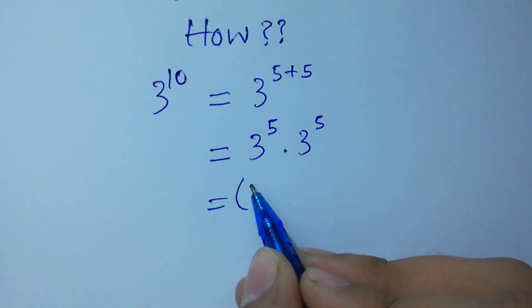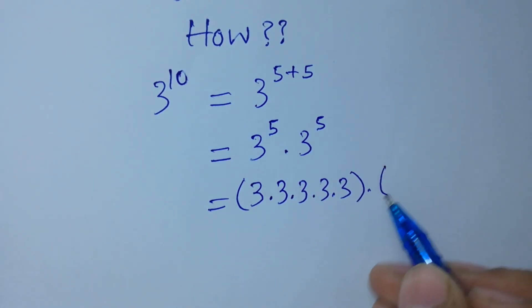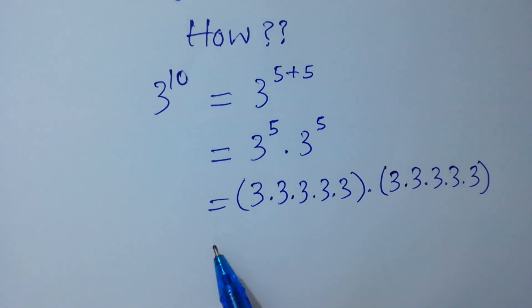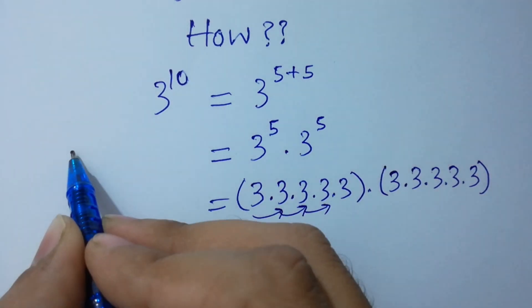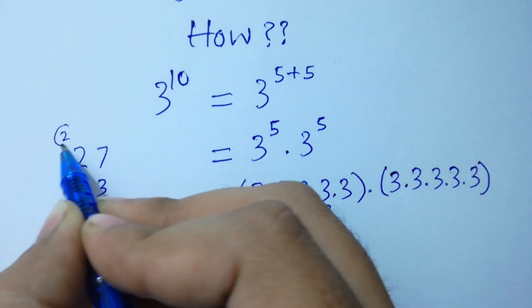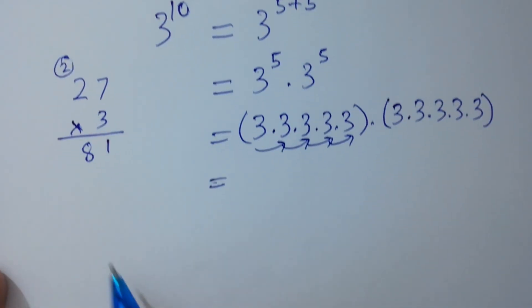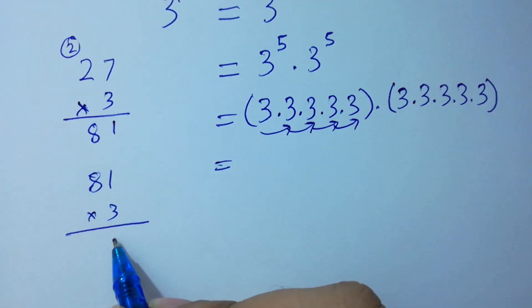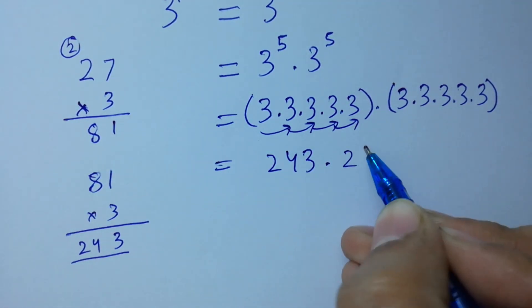Calculating 3 to the power 5: 3 times 3 is 9, times 3 is 27, times 3 — 7 times 3 is 21, write 1 carry 2, 2 times 3 is 6 plus 2 is 8 — gives 81, then 81 times 3: 3 times 1 is 3, 8 times 3 is 24, giving 243. So 3 to the power 5 equals 243. Now 243 times 243: working through the multiplication gives 59049. This confirms 3 to the power 10 equals 59049.